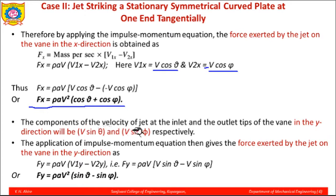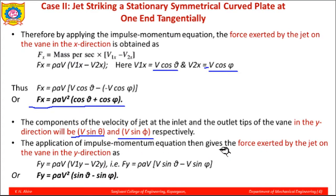The components of jet velocity at the inlet and outlet tips in the y-direction are V sin θ and V sin φ respectively. Applying the impulse-momentum equation in the y-direction: Fy = ρAV × (V1y − V2y). Substituting V sin θ and V sin φ with velocity V taken as constant: Fy = ρAV²(sin θ − sin φ).